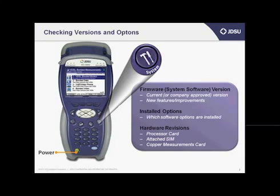You can also check the hardware versions that are on your HST — that means your processor card, the attached SIM, and then the copper measurements card. Those are important to know, especially if you're going to call the technical assistance center.